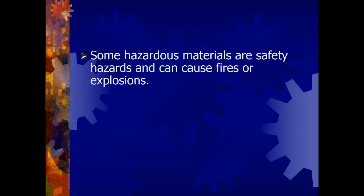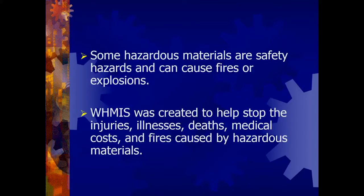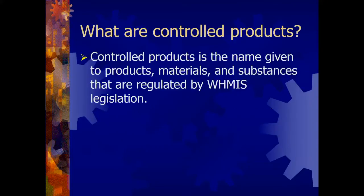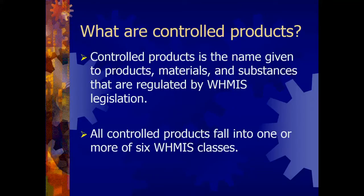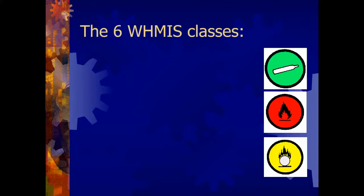The injuries and illnesses, even deaths, caused by hazardous materials, as well as the building losses and medical costs — these are the things WHMIS is meant to reduce or stop. Materials and substances regulated by WHMIS are referred to as controlled products, and these fall into one or more of six WHMIS categories.